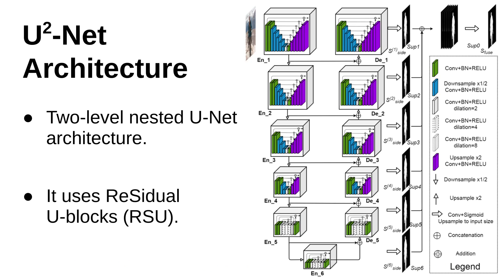Now let's move on to the main architecture, that is U²-Net. This is the block diagram taken from the original paper. It's a two-level nested U-Net architecture. The blocks inside are similar to U-Net, and the entire architecture as a whole is also a U-Net — that is why the author describes this as a two-level nested U-Net architecture, and that is how it gets its name U²-Net. Each of these blocks uses the residual U-block. We will use this diagram during the implementation as well.